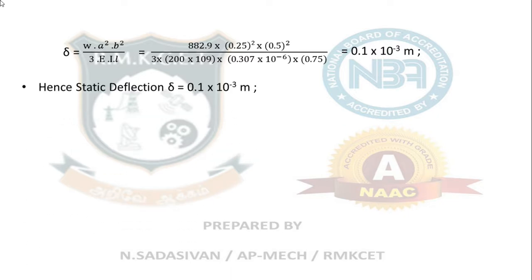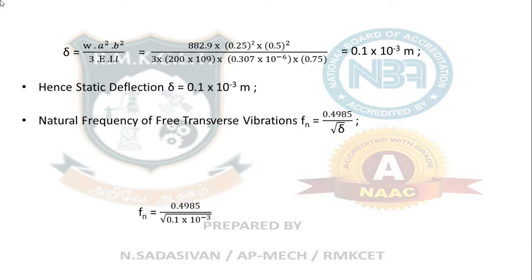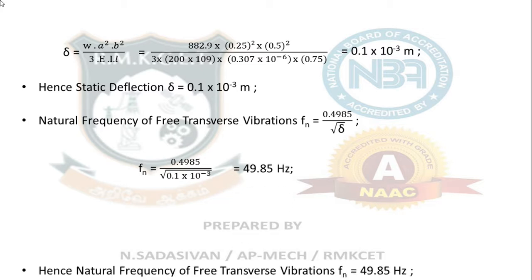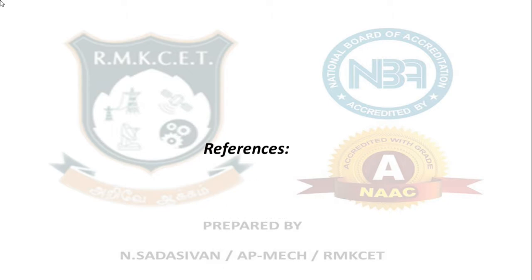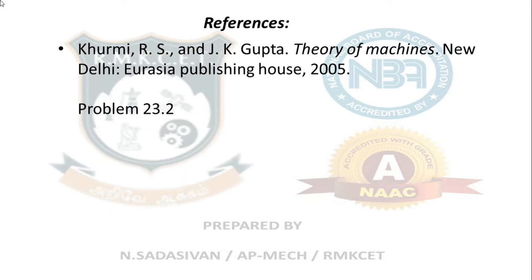Now we can find out the natural frequency very simply. Static deflection is 0.1 × 10⁻³. The same formula 0.4985 divided by δ. Just substitute this 0.1 × 10⁻³. It is 49.85 hertz. Therefore, natural frequency of transverse vibration is 49.85 hertz. Here in this problem, we have asked only transverse vibration. Longitudinal is not asked. That completes the problem. Thank you.